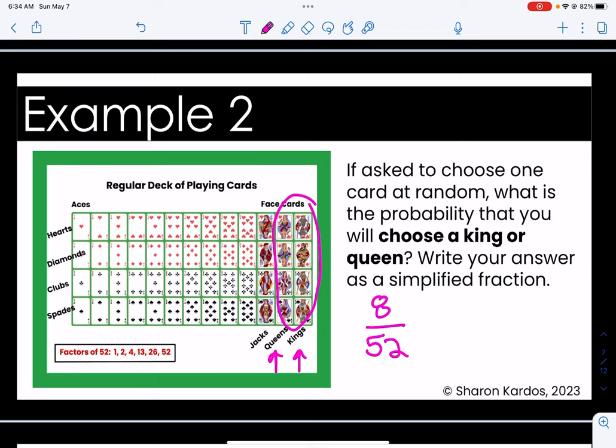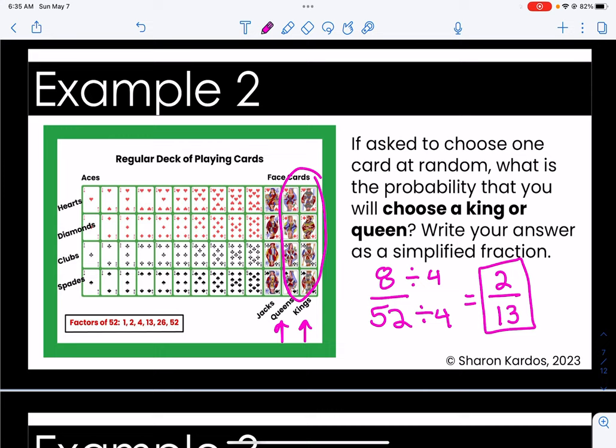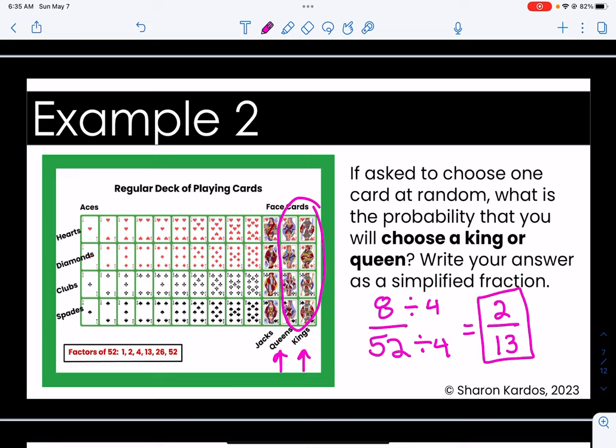Now I already know I can simplify this fraction because eight and 52 are both even numbers so I know I can divide them both by two but if I can divide by two I always like to try four also and it just so happens that I can divide them both by four which is going to give me two over 13. So the probability that I would choose a king or a queen is two out of 13. And remember you could take this further and change it into a percent by dividing the numerator by denominator but our problem asks us to leave it as a fraction.